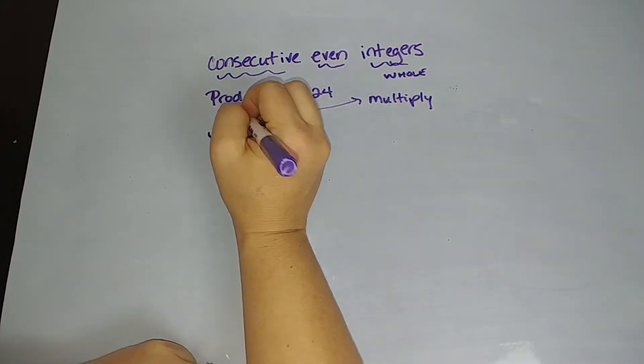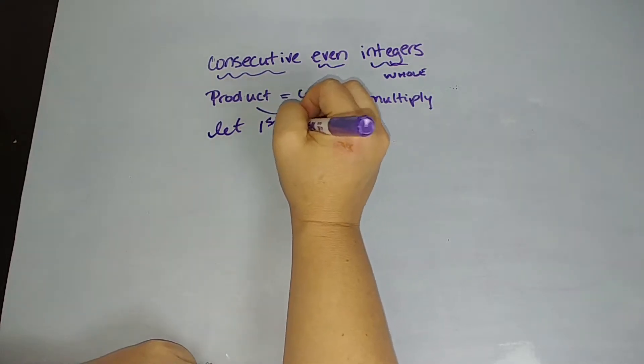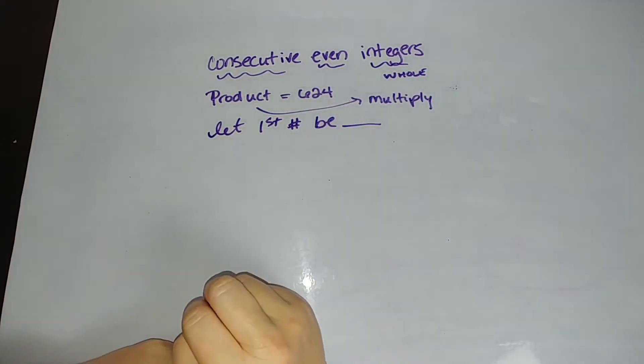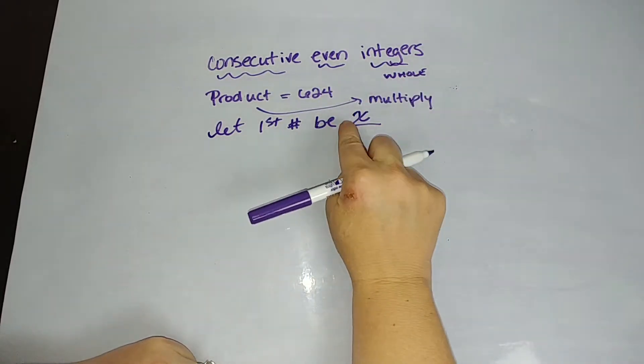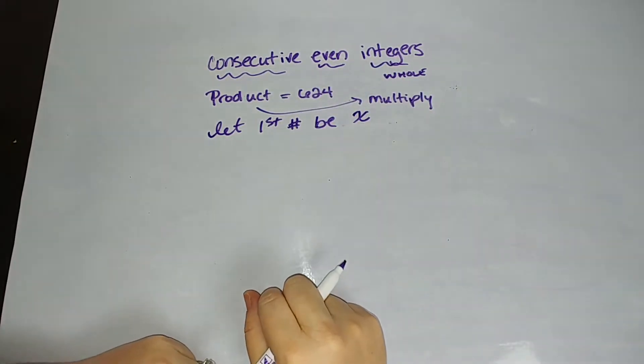Okay, so you're going to let the first number be, well, what are you going to let it be? You don't know what it is. Anytime we don't know what something is, we let it be a variable. So we're going to let it be x. Okay, so let's think about this. If our first number is x, what is our first number?